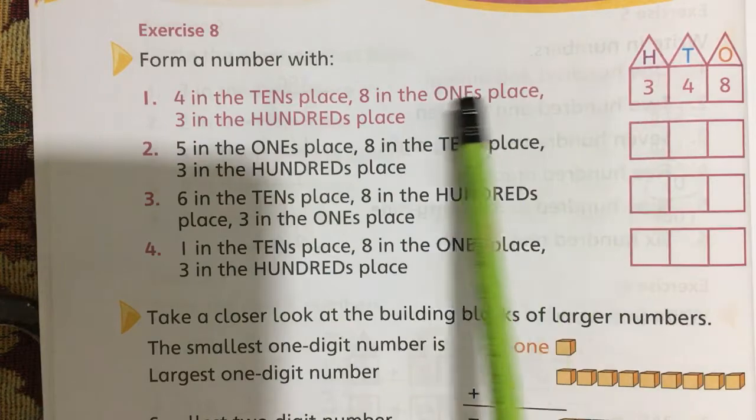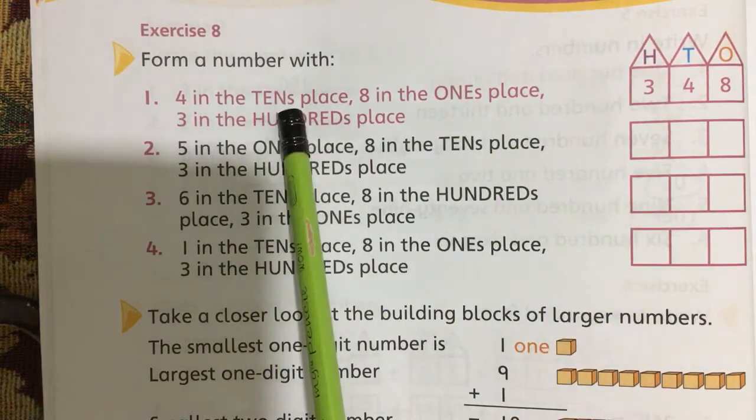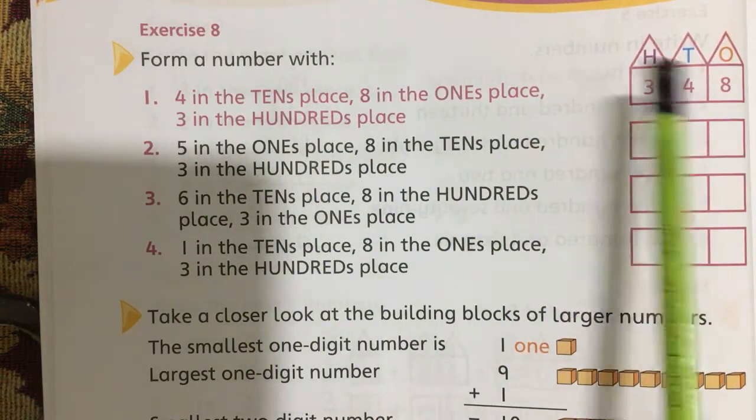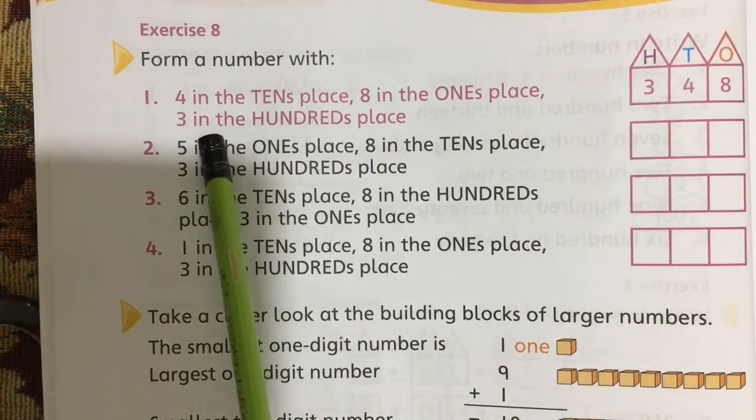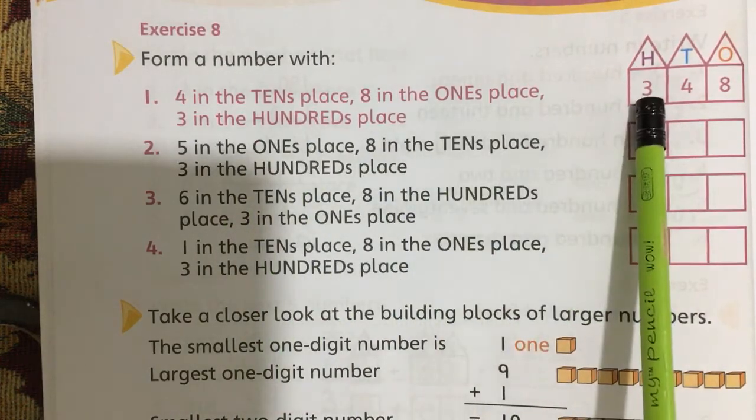We have to form a number with these words: 4 in the tens, 4 in the tens place, 8 in the ones place, we will write 8 in the ones place, 3 in the hundreds place, 3 in the hundreds place. So the number becomes 348.